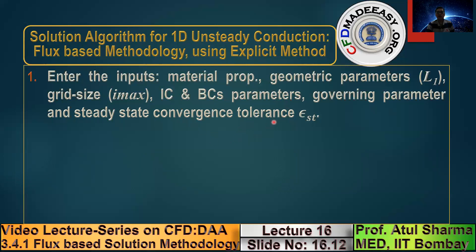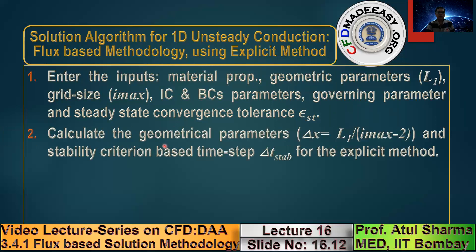We want to generate pictures at different timestamps until the picture stops changing — until you can make a movie and the picture has stopped changing. We use a steady-state convergence criterion where the convergence parameter should approach zero. Since a computer doesn't understand zero, we define a convergence tolerance epsilon_st as the steady-state convergence tolerance, which is user-specified. The thermophysical properties and geometric parameters appear as coefficients in the linear algebraic equations — like coefficients AE and AW from the finite volume method.